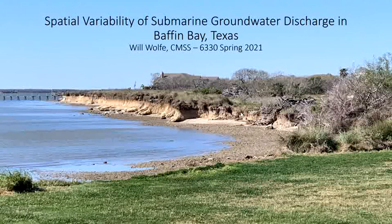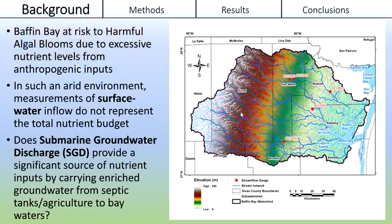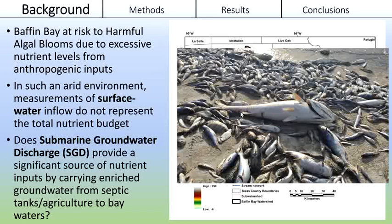Hey, this is Will Wolf, and we're going to talk about spatial variability of submarine groundwater discharge in Baffin Bay. Baffin Bay is a hypersaline lagoon in South Texas that has seen an increase in harmful algal blooms in recent years, with many studies linking these blooms to excessive land-derived nutrients such as septic fields and agriculture.